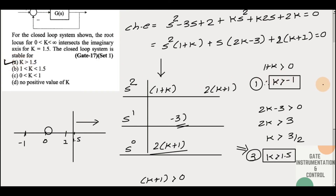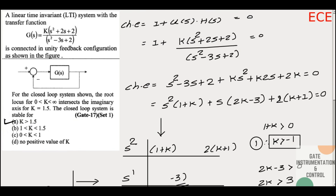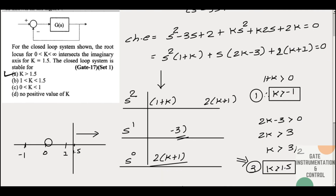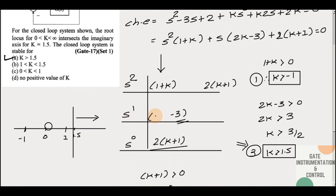When k > 1.5, our system is stable. So even if a root locus question asks about stability, you don't need to solve it via root locus — use the Routh-Hurwitz table. It will be faster and give you an accurate answer. Our answer is option A: k should be greater than 1.5. I hope this question clarified how to solve this type of problem. If you have any doubts, ask in the comment box. See you in the next question — goodbye and thank you.